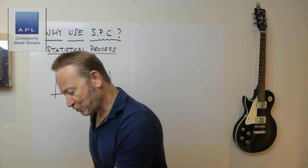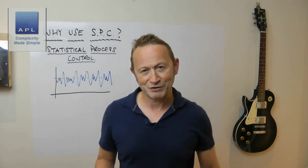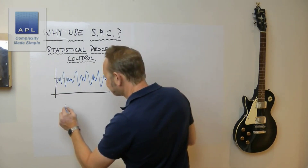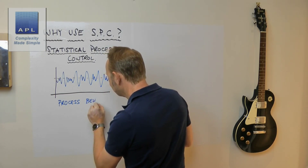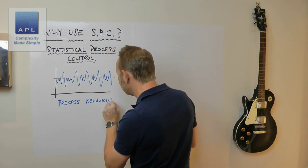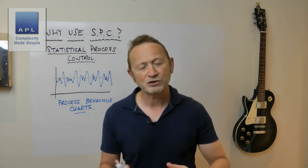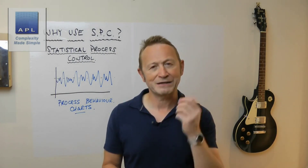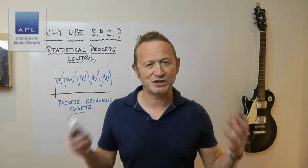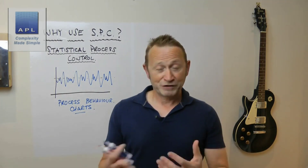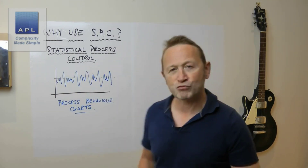Your process essentially generates a random number for that dimension. Another way to think of it is that it generates a natural process behavior. Some people do call these 'process behavior charts' because that's what they're trying to communicate — the natural process behavior so you can make better decisions. Don Wheeler's book 'Short Run SPC' is great; he talks about process behavior charts in that textbook. So you have a random number generator, and the problem is you don't necessarily know what's going to come next.